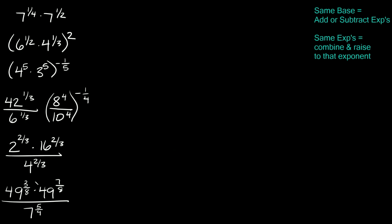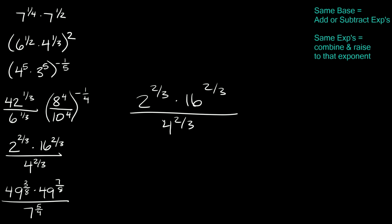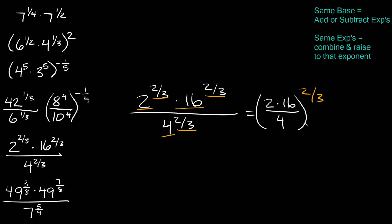Let's do two more combining multiplying and dividing. First: 2 raised to the two-thirds times 16 raised to the two-thirds, all over 4 raised to the two-thirds. The bases are different, but all the exponents are the same. So we rewrite this as 2 times 16 over 4, all raised to two-thirds. Two times sixteen is 32, and 32 over four is eight, so we're left with eight raised to the two-thirds. That's your final answer.